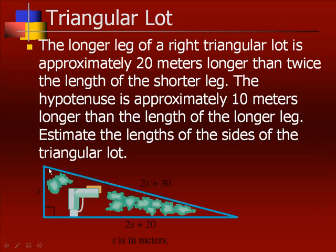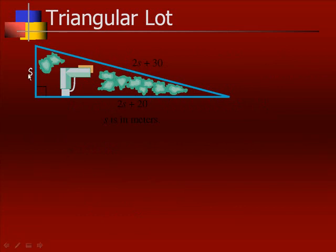We have a lot that looks like this. We'll let the shorter leg be S. Therefore, the longer leg would be 20 meters longer than twice that, which would be 2S plus 20. And then the hypotenuse is 10 meters longer than that. So it would be 2S plus 20 plus 10, which would give us 2S plus 30. So this would be our triangle set up.